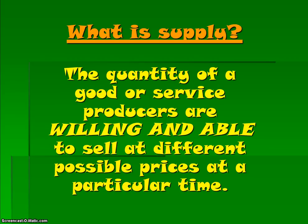That ability piece is so important because some producers would love to sell their products at low prices so they can get more people to buy them. But at some very, very low prices, they're not able to keep their cost of production low enough to be able to afford to sell products at those low prices. So it's the ability piece that's important, not just the willingness piece, but the ability piece.